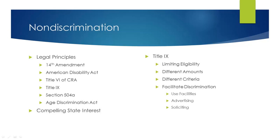Title IX is very explicit in financial aid. It prohibits an institution from limiting eligibility for financial aid based on sex, providing different amounts based on sex, or listing different criteria based on sex. It also prohibits the facilitation of discrimination through facilities use, advertising, or soliciting federal financial aid. There are many regulations around federal financial aid, and many ways the government tries to ensure access is available for everybody.